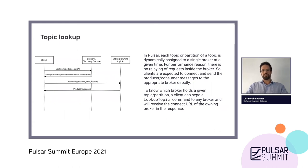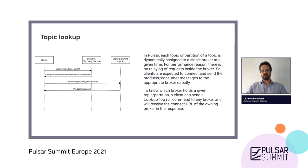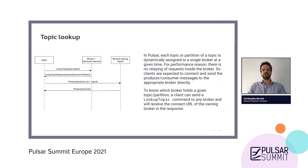Let's talk about topic lookup, which is linked to how Pulsar works. In Pulsar, there's only one broker which can write or read from a topic at a given time, and there's a mechanism that will choose this broker dynamically. To know which broker it needs to communicate with for a given topic, the client needs to send a lookup topic message. You can send it to any broker and that broker will give the URL of the owning broker as a response. Then the client can perform its operation on the correct broker.